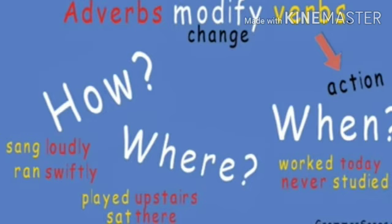For example: 'sang loudly' — How? Loudly. 'Ran swiftly' — How? Swiftly. 'Played upstairs' — Where? Upstairs. 'Sat there' — Where? There. 'Verb today' — When? Today. So, if you question how, where, and when to the action word — the verb — you will get the adverb. Now you will see how the adverb modifies the verb.